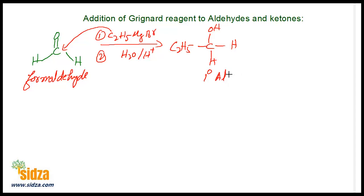But if you take any other aldehyde and react with the Grignard's reagent and then do the hydrolysis, you will get a secondary alcohol. From aldehydes you get secondary, from ketones you get tertiary alcohol. But if you take formaldehyde, then you will get a primary alcohol. Hope you got the concept.